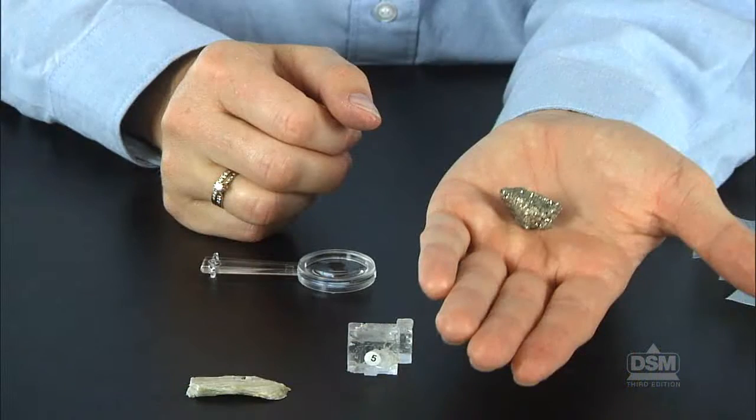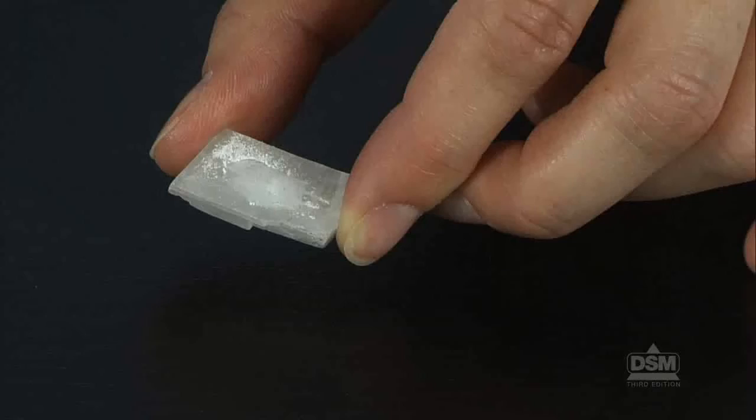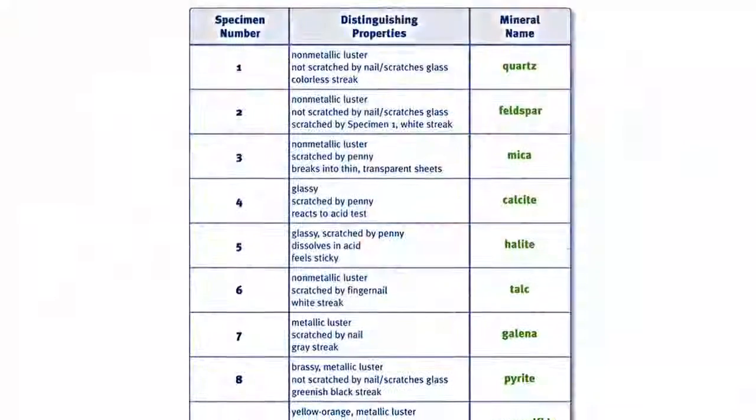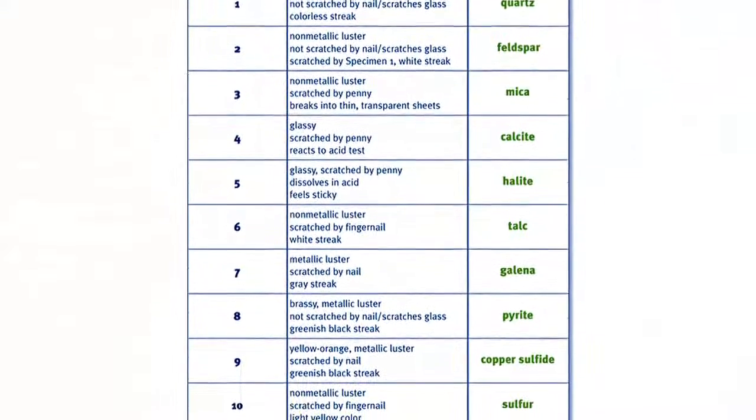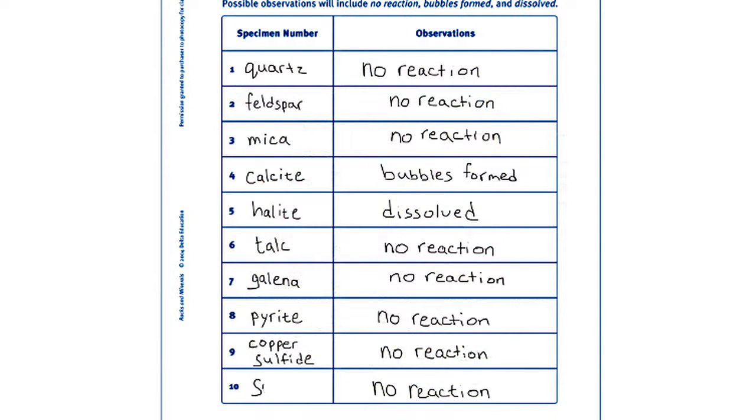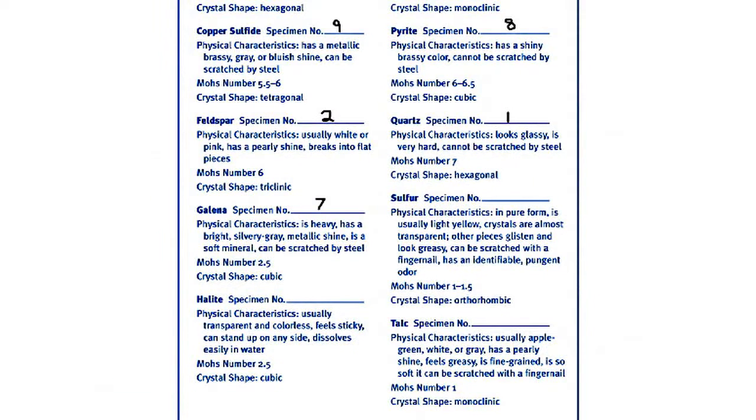Similarly, by comparing the information on the mineral data sheet with the data they have recorded from the luster, hardness, streak, and acid tests, students should be able to identify all ten mineral specimens. Instruct students to record the name of each mineral next to the appropriate specimen number on activity sheets three through six. Then have them record the specimen number next to the name of each mineral on their mineral data sheets.